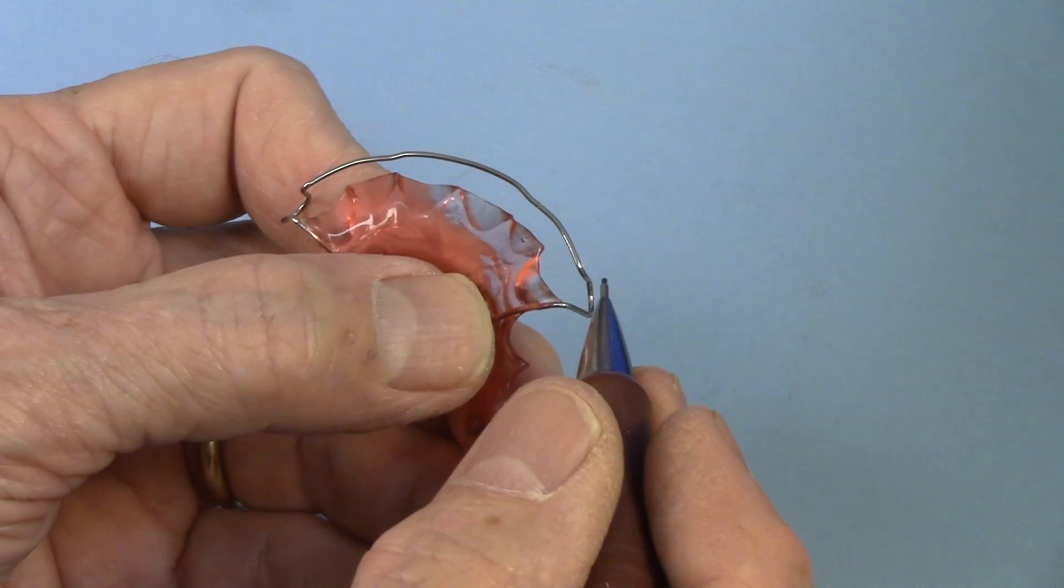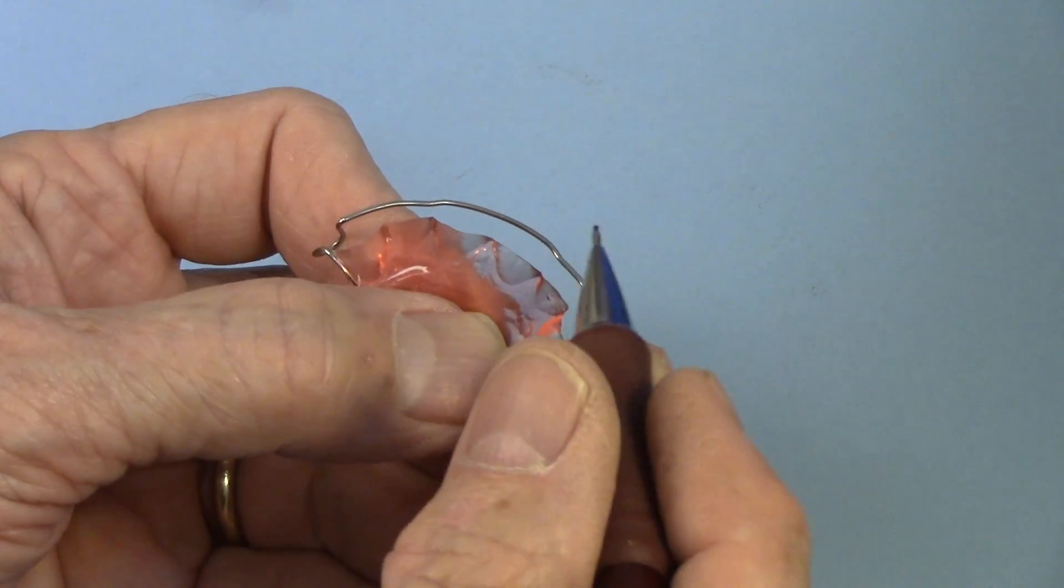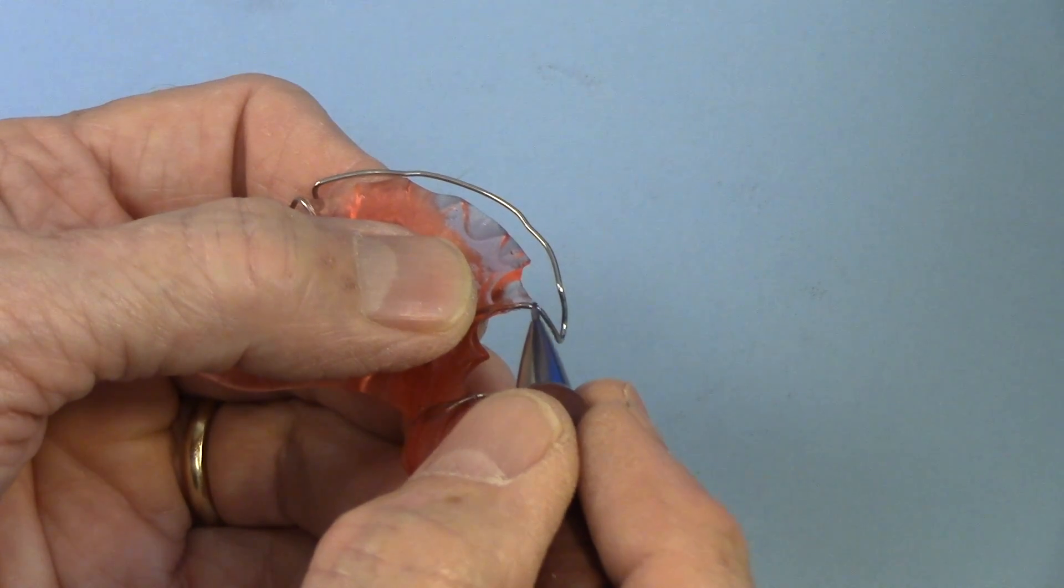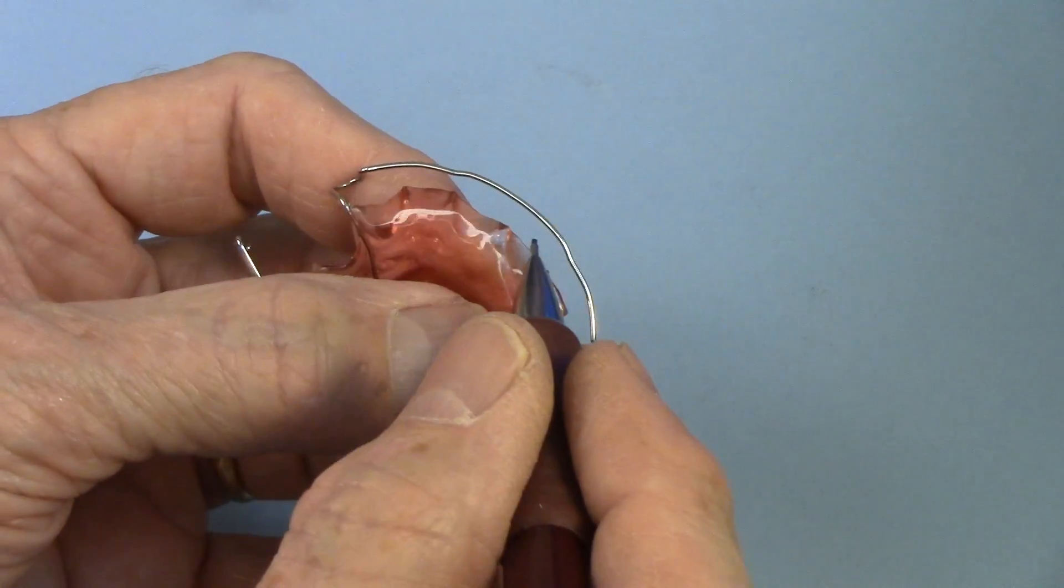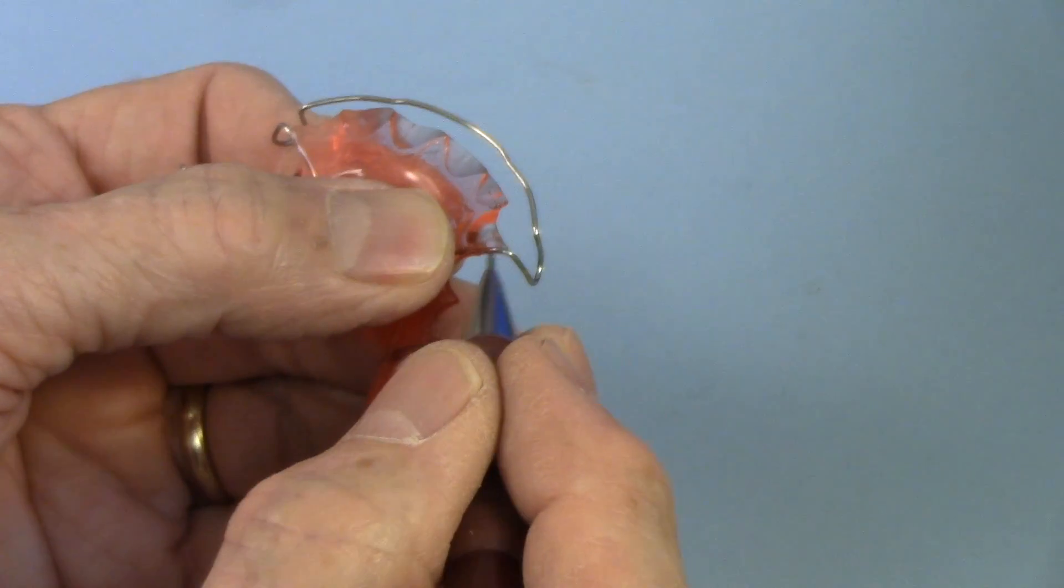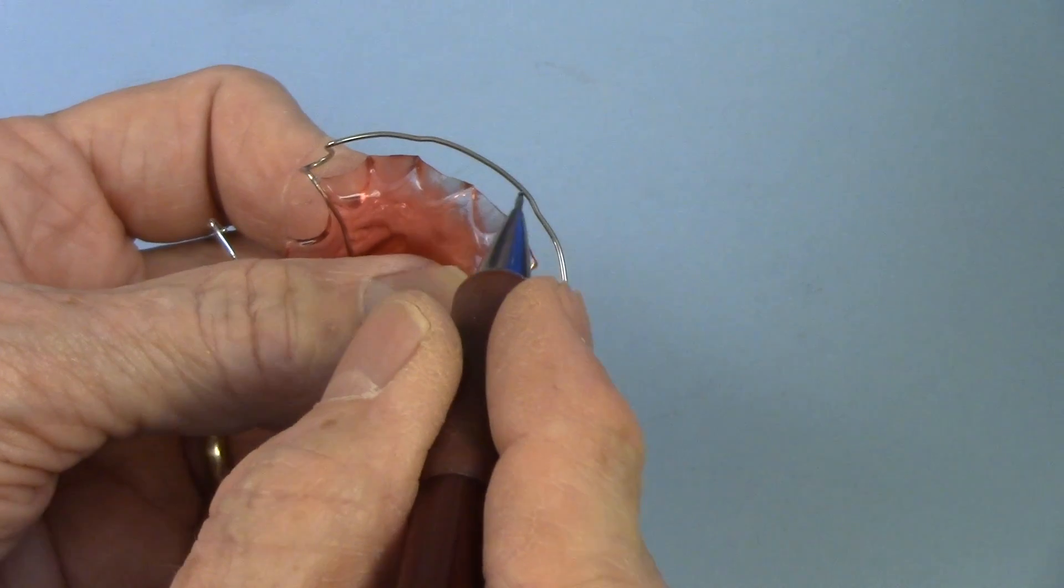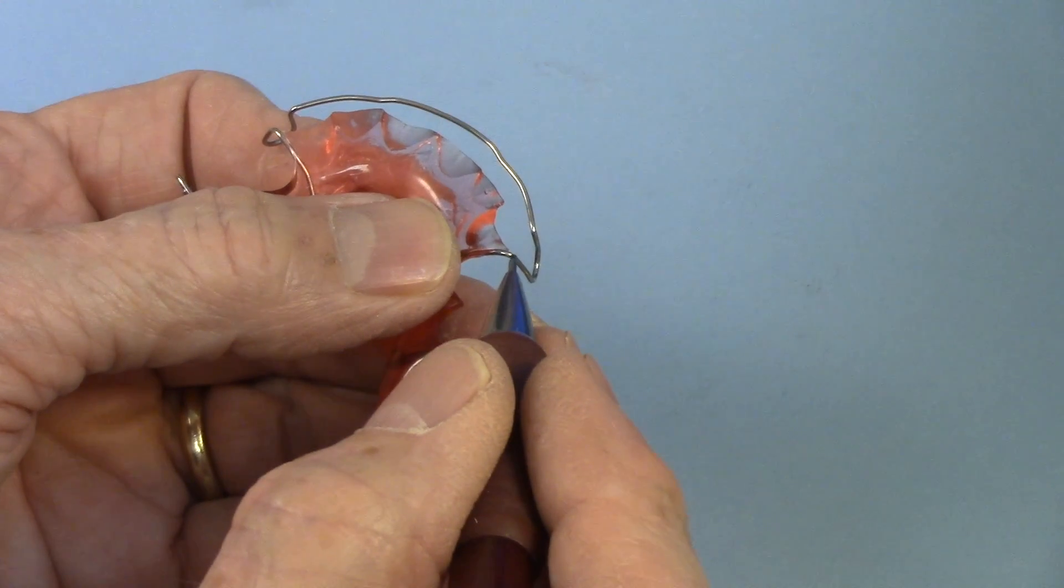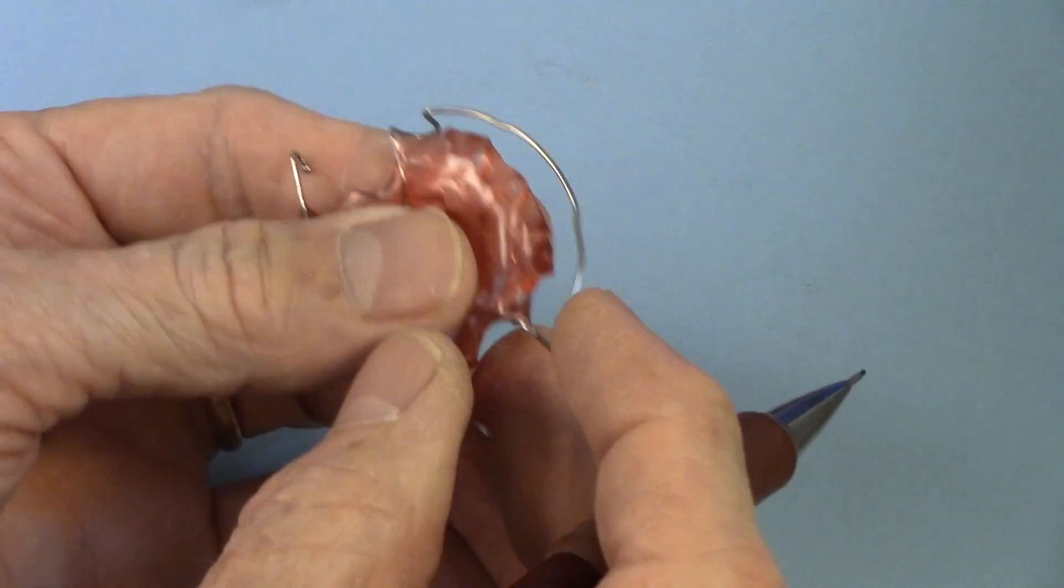But since elasticity and tensile strength are inversely proportional, that means that the more elasticity you have, the less tensile strength you'll have and the less durability you'll have. So this is the point of stress on a labial bow. If you have a springy wire, it's going to be less durable here. If you have the teeth all in alignment, then maybe you can go with the cobalt alloy wire and have it go across here and you'll be extremely durable right here because you don't need the spring right there.